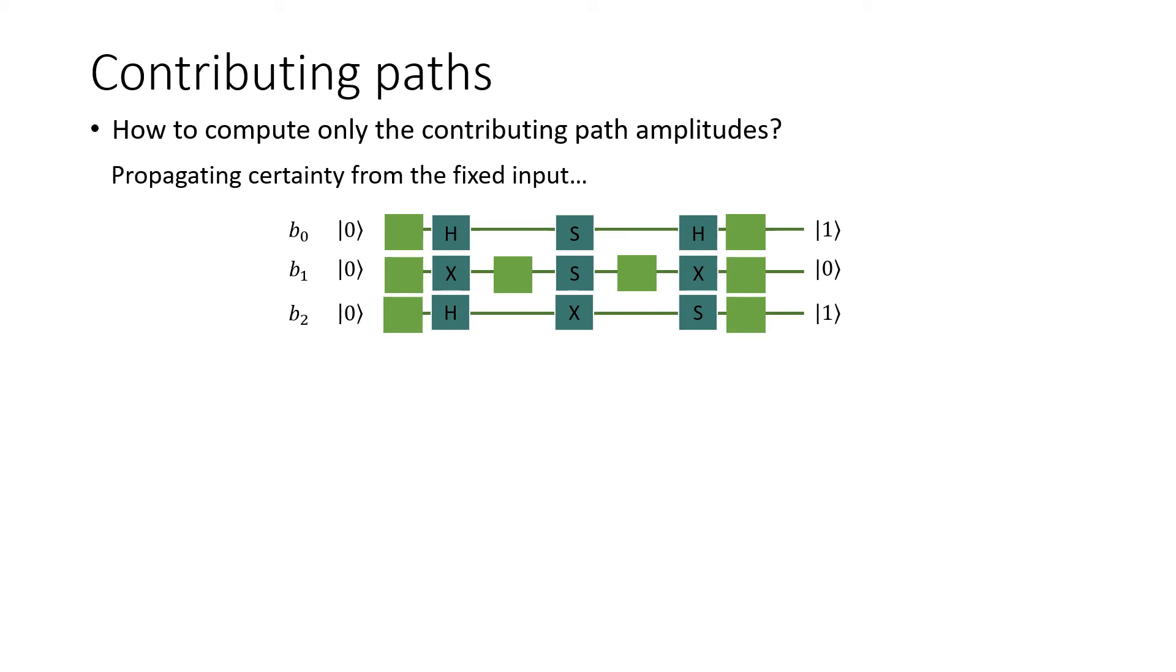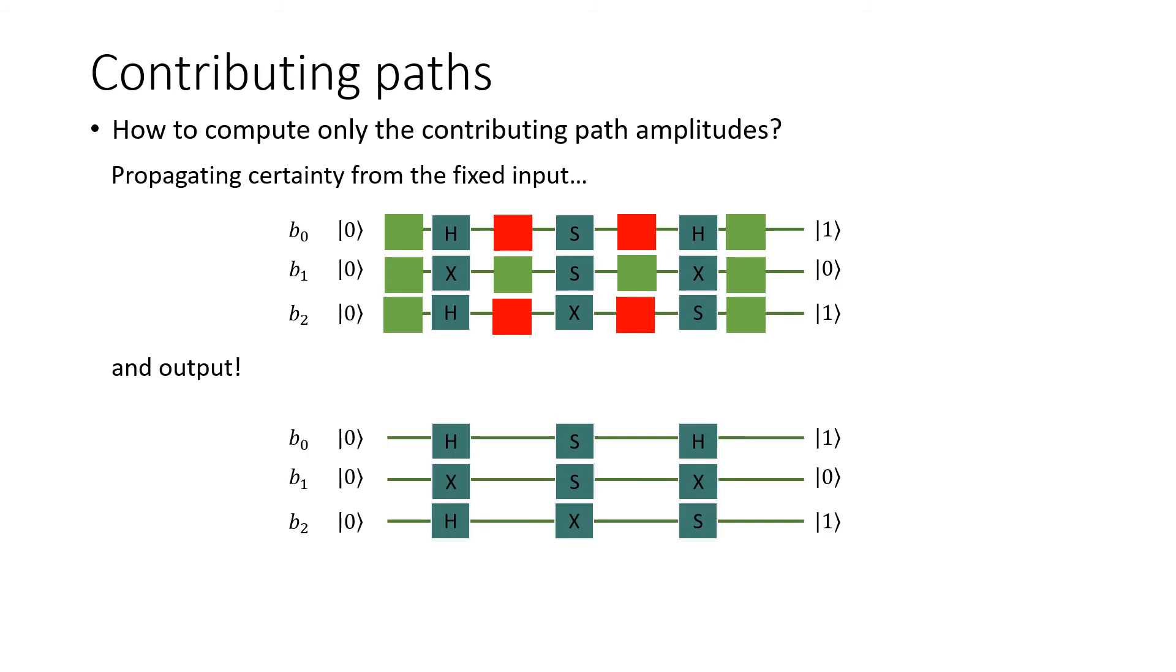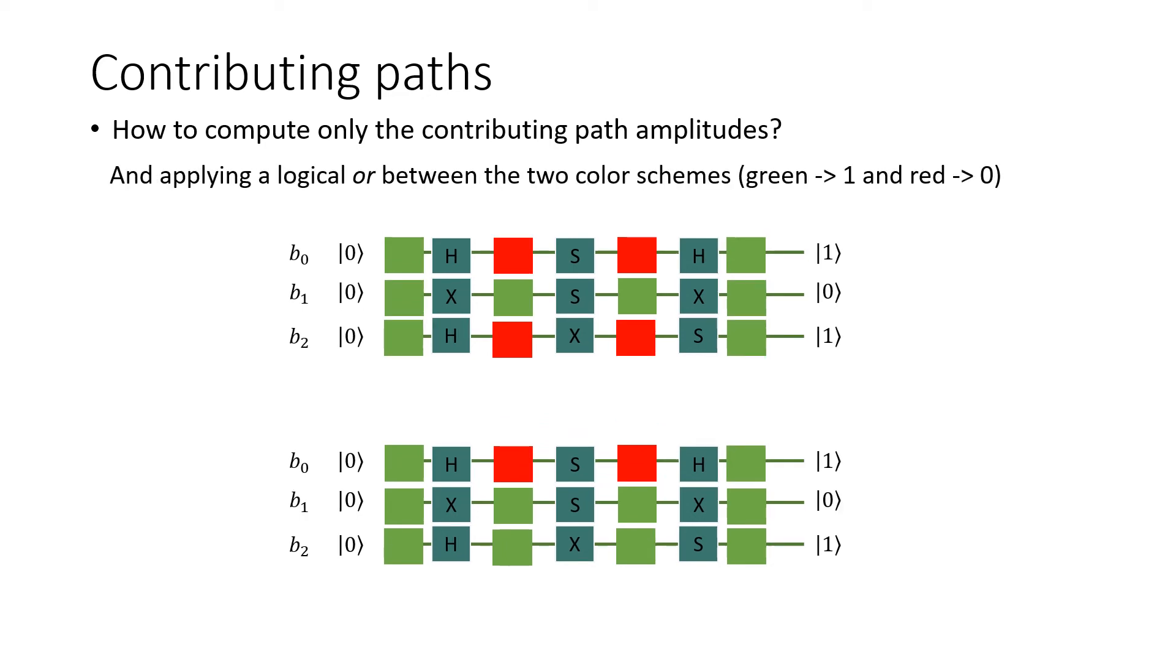The remaining intermediate states are painted red. We repeat this step, this time starting at the output and sweeping the circuit backwards.